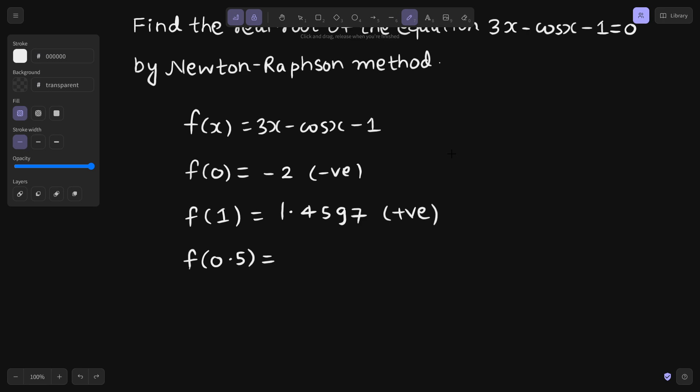If I try for 0.5, this will be 3 into 0.5, which is 1.5 minus cos of 0.5 minus 1. This is giving me negative 0.3776. Again, this value is negative.